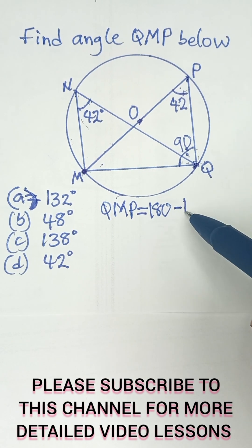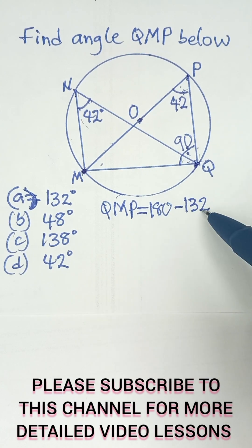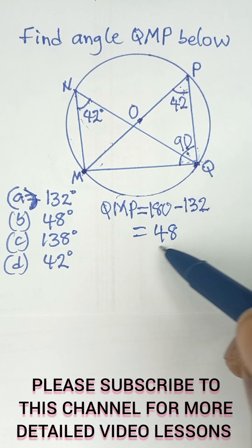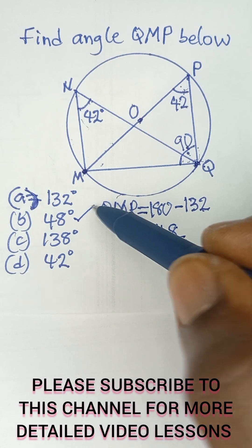And the sum of these two is 132. So 180 minus 132 is going to give us 48. So QMP is 48 degrees and that is option B.